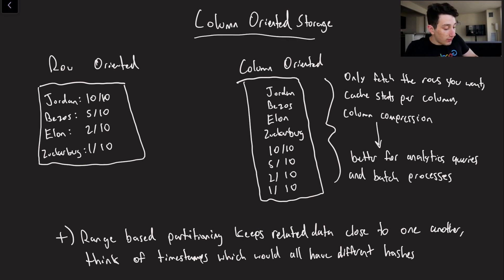But basically just to reiterate on the difference, we've got row oriented storage which basically has every single row of data next to one another on disk. And then differently we have column oriented storage where we take every single column and we put those next to one another on disk. So this would be the name column.